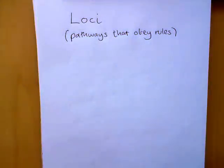So we'll look at loci in this video. Now loci is basically pathways that obey rules, and at GCSE level there are four that you've got to be familiar with.